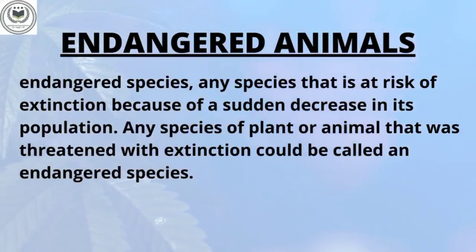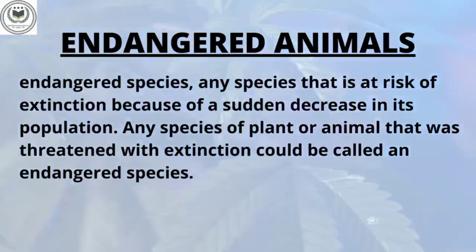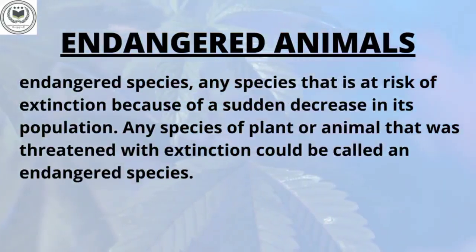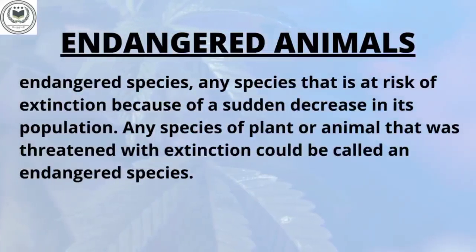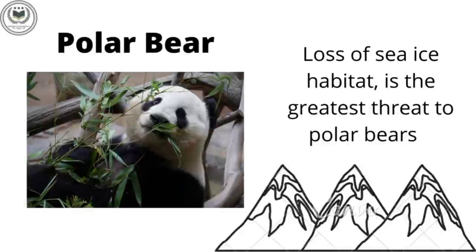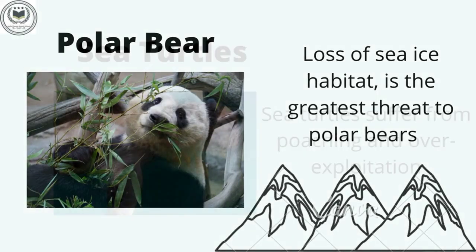Now we can look at some of the examples of endangered species. Polar bear — they are dependent on sea ice, but changing climate makes them vulnerable.